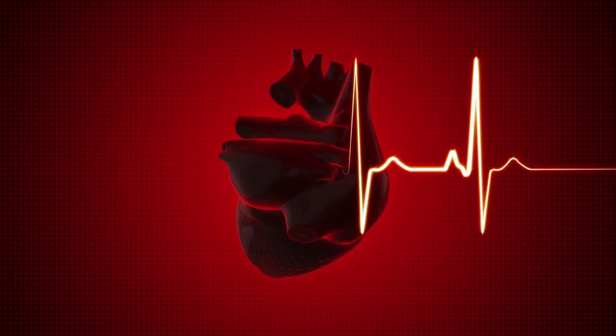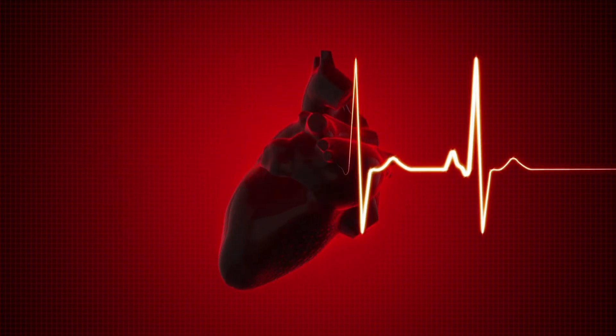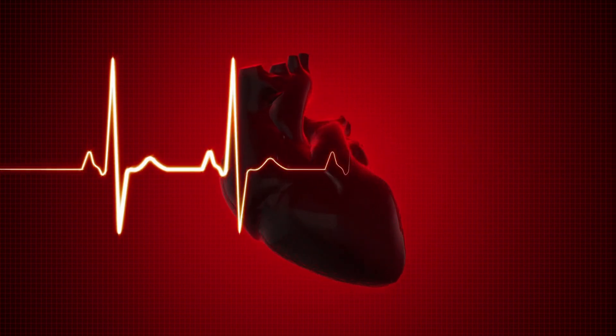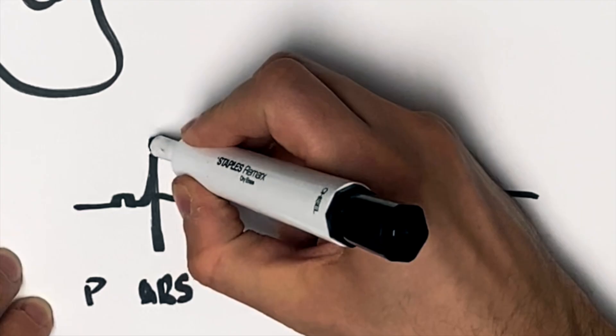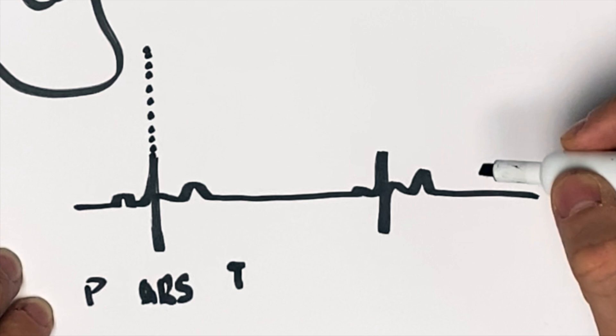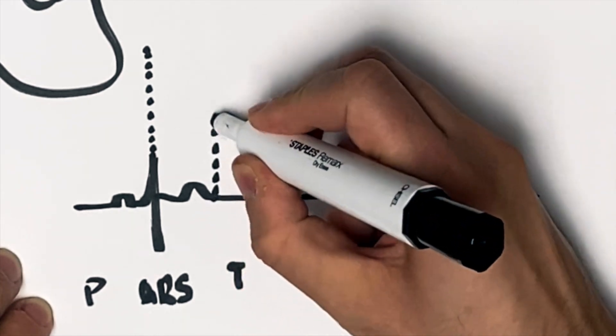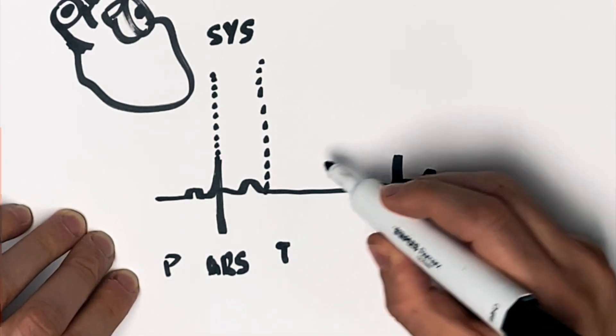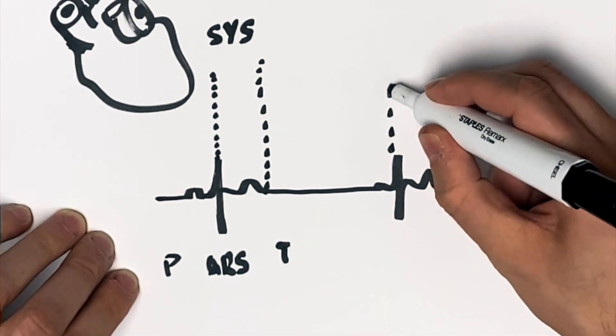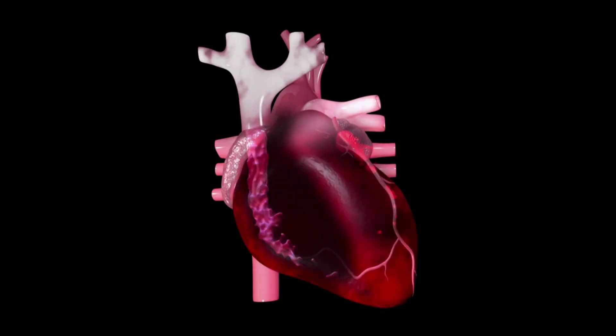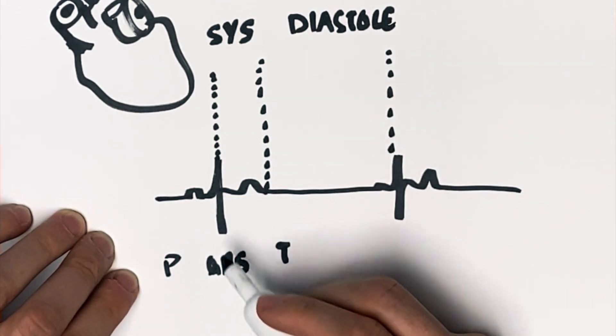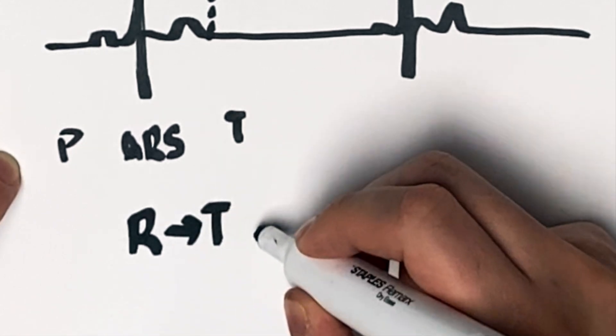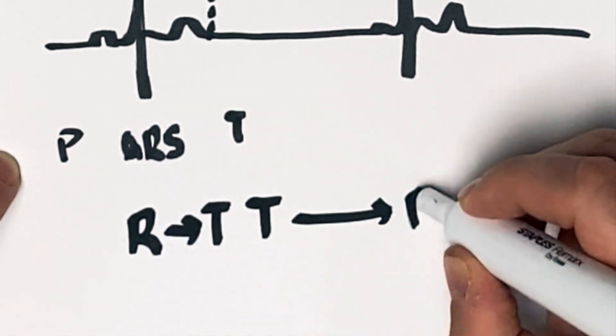The very first thing that you need to realize is what are the components that make up systole and what are the components that make up diastole. The very first thing you want to pinpoint is where are you in the cardiac cycle. Your systole occurs at the peak of your R wave and it ends at the end of your T wave. This is your systolic event here. Everything that occurs after the T wave until the next R wave is diastole. The way I remember this is it's from the R wave to the T wave and then the T wave back to the R wave.